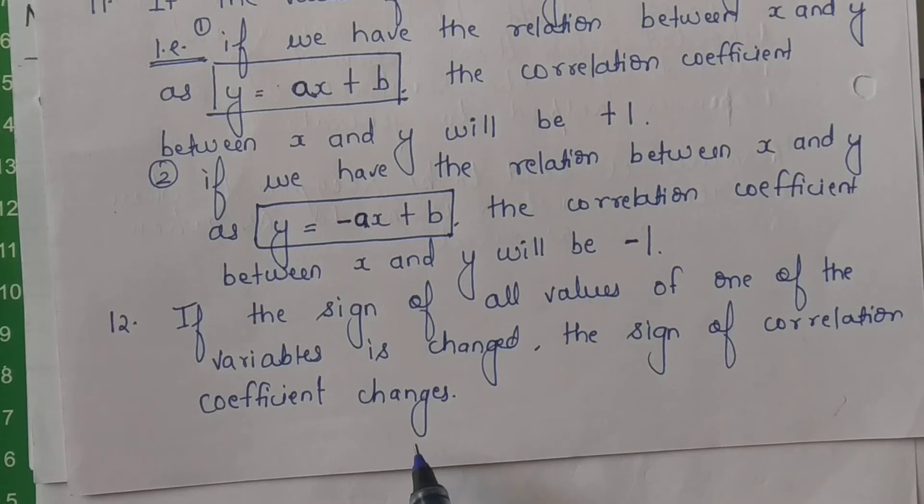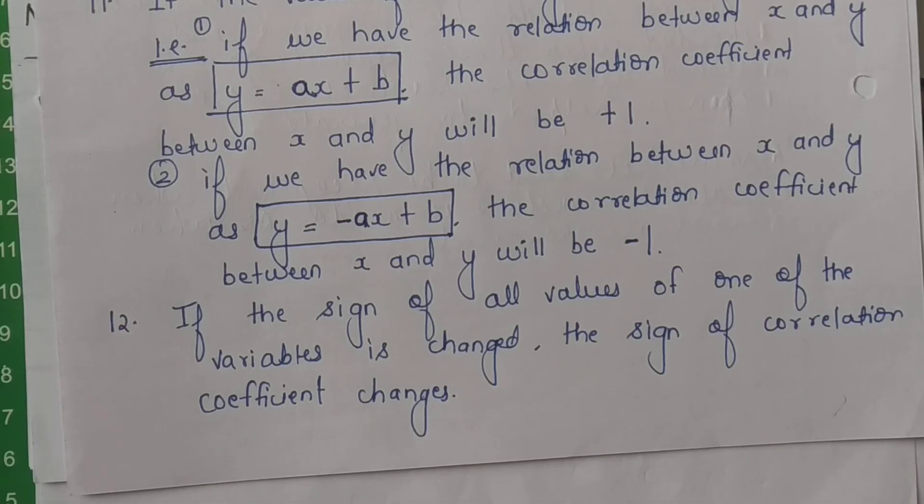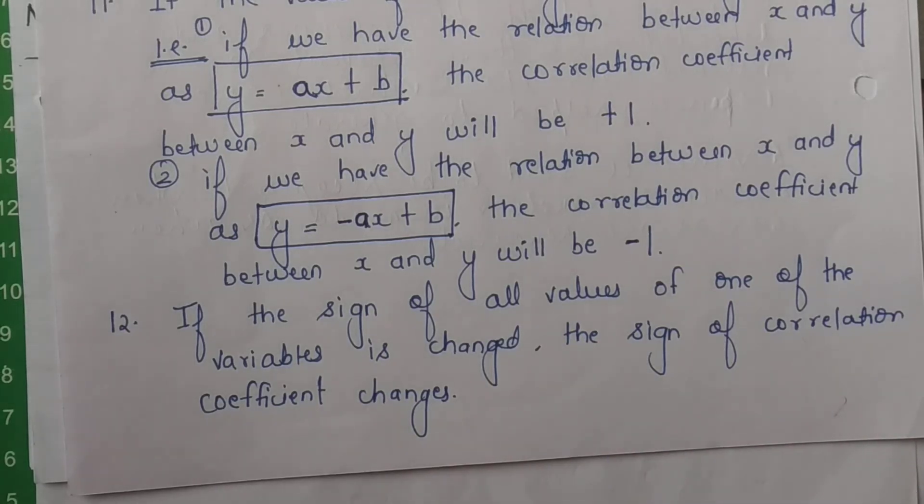Toh aapka correlation coefficient ka sign bhi badal jayega. Agar hum main x series mein sirf sign badal doon, y series mein koi sign na badal ho, toh mera jo r ka answer hai uska bhi automatically sign badal jayega. Agar woh pehle positive tha, mainhe negative kar diye sare variables ko, ek variable ke sare items ko, toh mera r bhi negative ho jayega aur woh negative co-relationship show karayega.